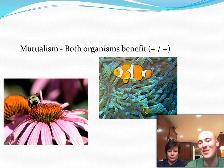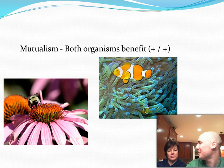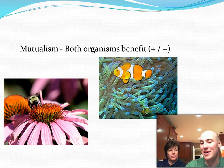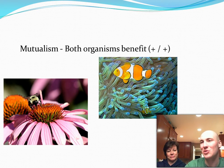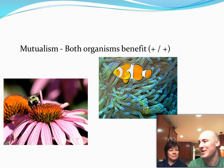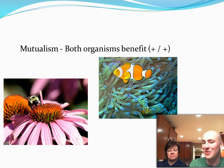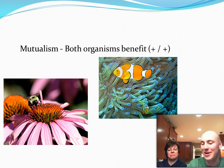The clownfish in the sea anemone — the clownfish gets shelter living in that sea anemone. The sea anemone actually benefits because it eats the fecal matter of the clownfish, getting nutrients from it. Also, there are small invertebrates that might otherwise try to get into the sea anemone and cause damage, that the clownfish feed upon. So it actually attracts food for the clownfish while it's hiding out — both organisms benefit.